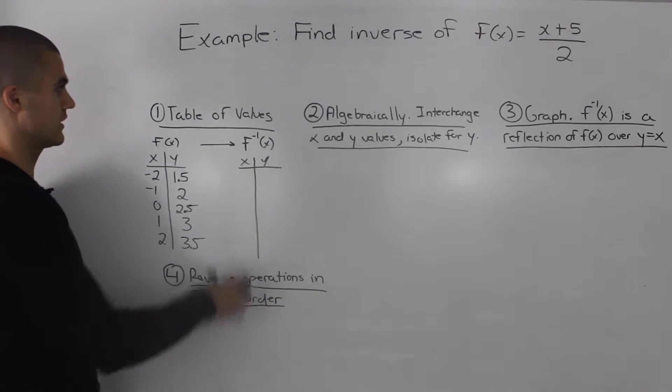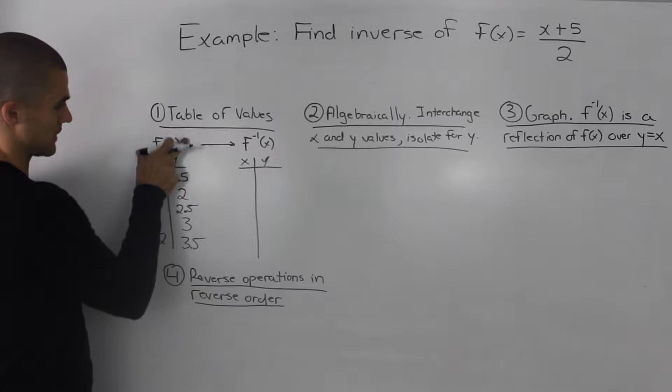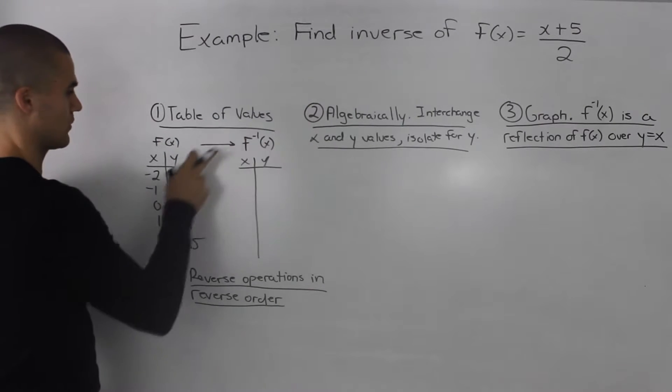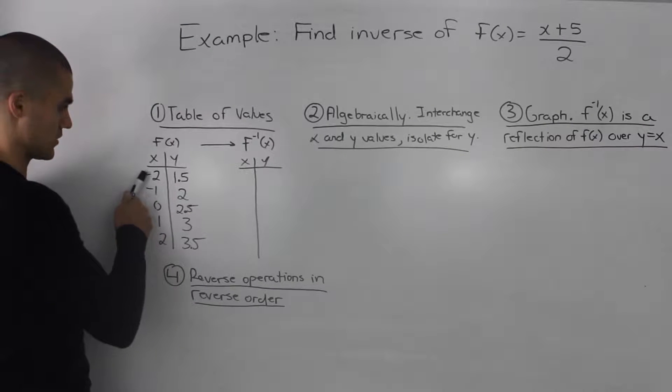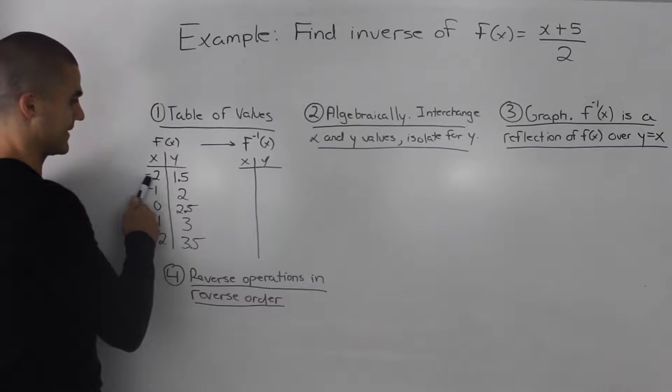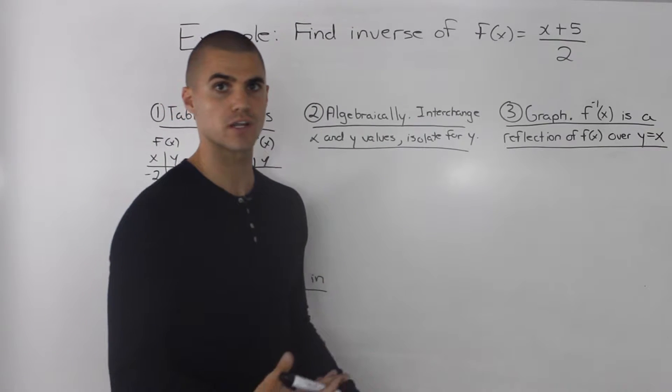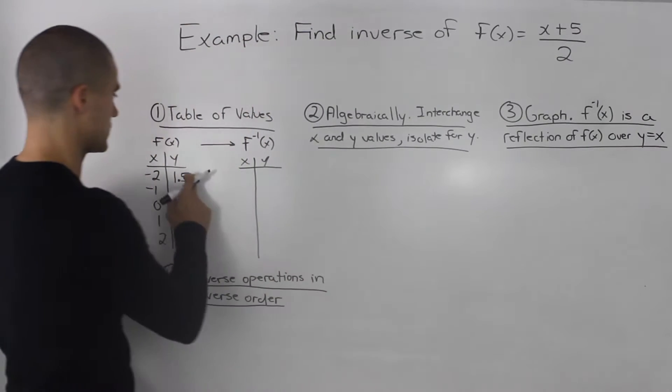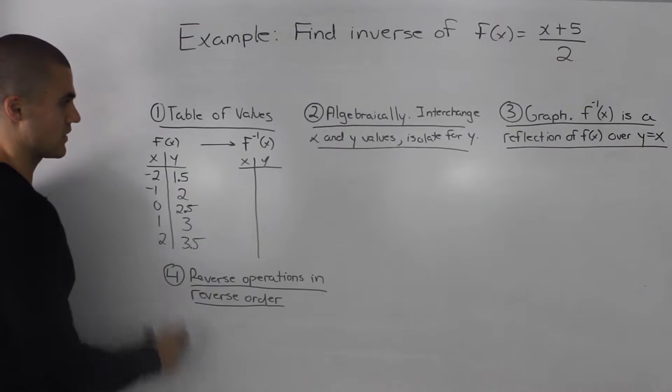So the first way to finding an inverse is through a table of values. So the first thing we have to do is make a table of values for the function that we're given, (x+5)/2. So I made a table of values here with x values negative 2 to positive 2. So for example, plugging in negative 2 into this function, we have -2+5 which is 3 and then 3 divided by 2 is 1.5. And respectively we did it for the rest of the points.